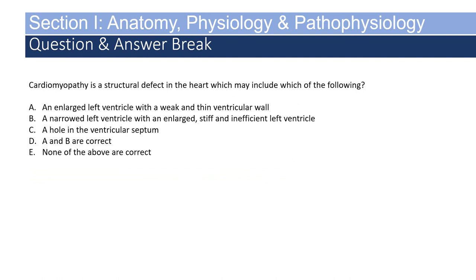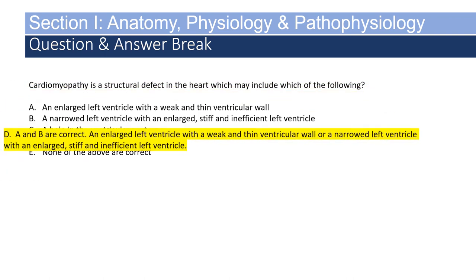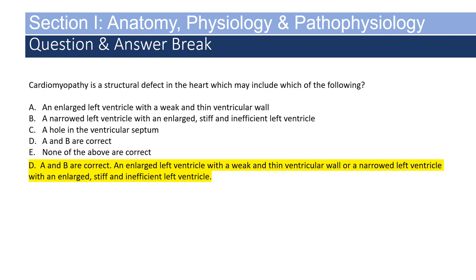Cardiomyopathy is a structural defect in the heart. Which of the following does it include? A — an enlarged left ventricle with a weak and thin ventricular wall. B — a narrowed left ventricle with an enlarged, stiff, and inefficient wall. C — a hole in the ventricular septum. D — both A and B are correct. If you answered D, both A and B are correct, you are correct. An enlarged left ventricle with a weak and thin ventricular wall, or a narrowed left ventricle with an enlarged, stiff, and inefficient wall, are both types of cardiomyopathies.